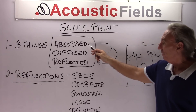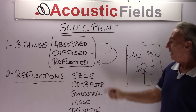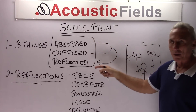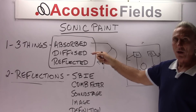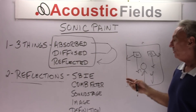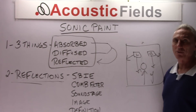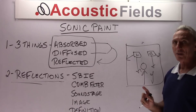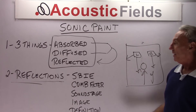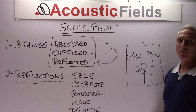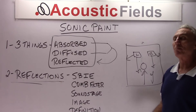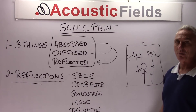So reflections are a big issue. How do we deal with those? We use absorption and diffusion. These are our laws — we use two of the three laws to treat the third. In this graphic, we show that only three things happen to sound: it's absorbed, it's diffused, or it's reflected. And we're using absorption and diffusion to manage the reflected energy.